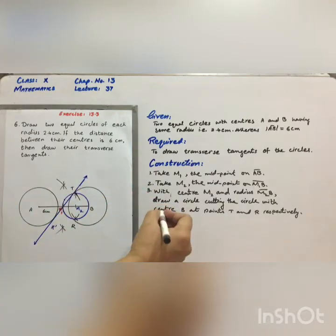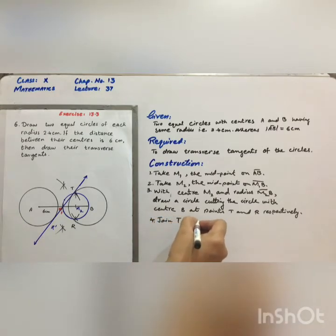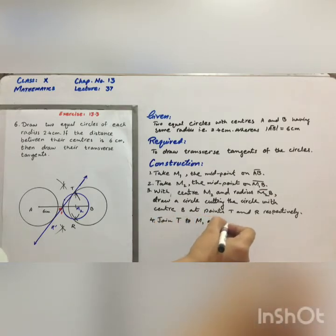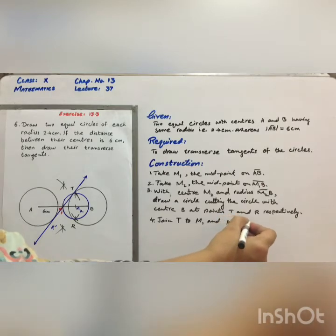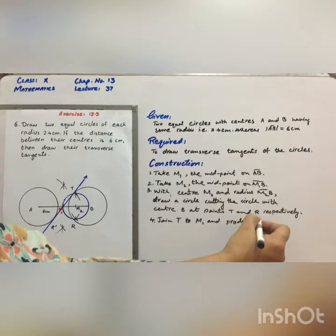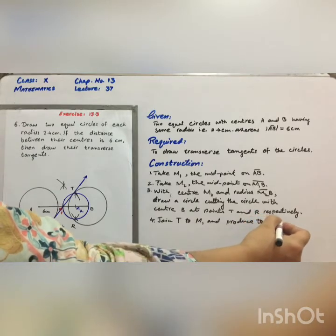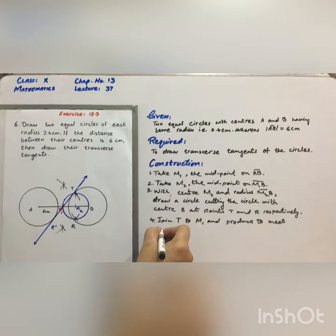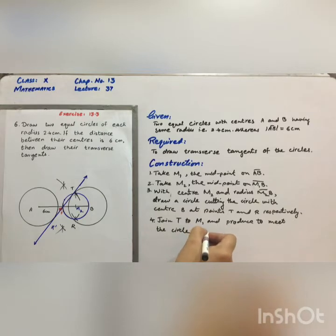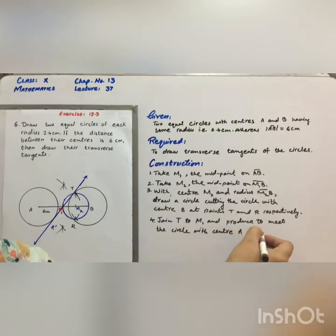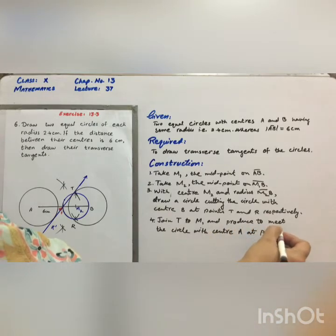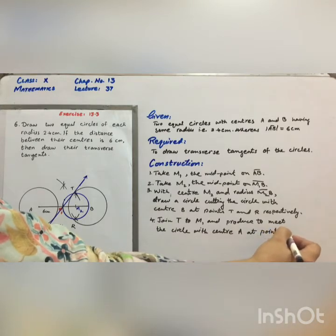Step number 4: join T to M1, which was the first midpoint, and produce to meet the circle with center A at point R complement or R dash.